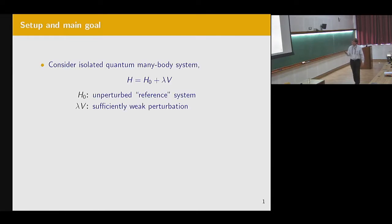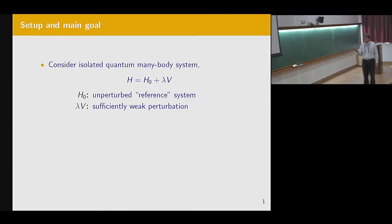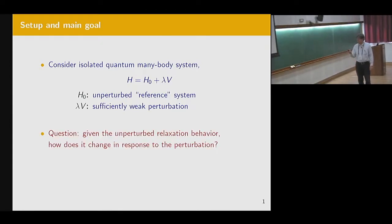So I summarize the setup and the main questions we are addressing here very briefly. We have 35 minutes. We consider an isolated quantum many-body system of this perturbative structure. You have an unperturbed reference system H0 and a sufficiently weak perturbation ΔV, where I will specify what this means in a minute. And then the question we address: given I know how the unperturbed system relaxes as a function of time, how does this relaxation behavior change in response to this perturbation here?